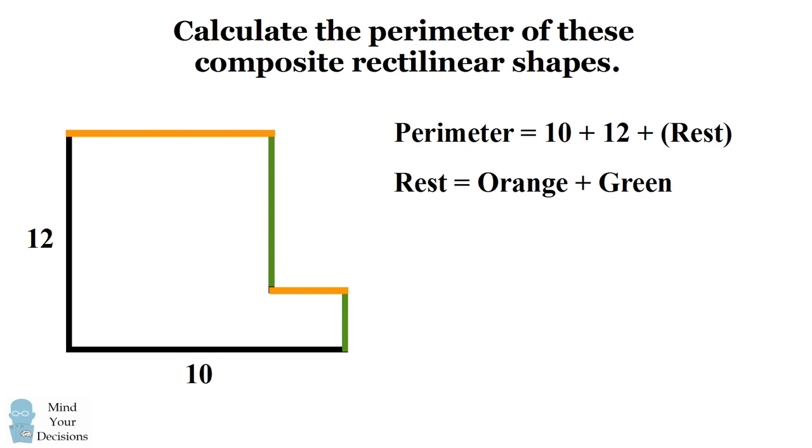We need to figure out the total length of the orange pieces and the green pieces. We can do this using a clever principle. We can consider the total length of the horizontal edges and see that these two orange edges will have a total length of 10. Similarly, we can look at the vertical edges and see that combined they will have a total length equal to 12.